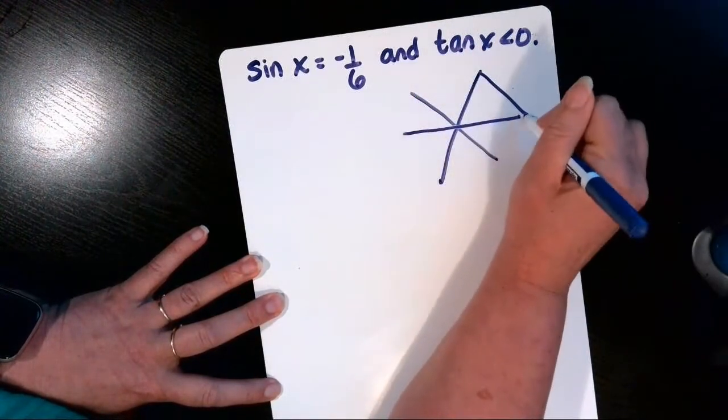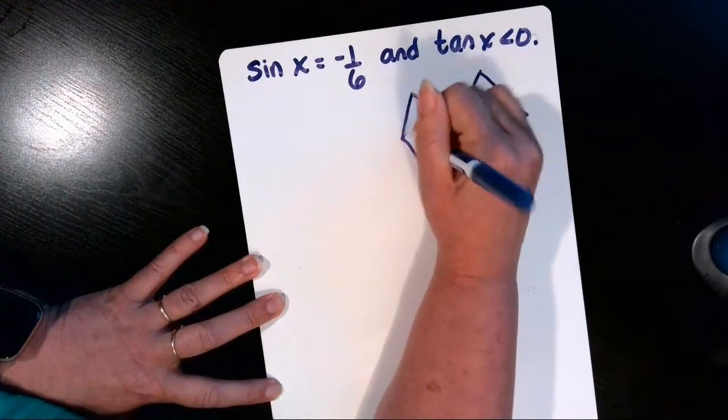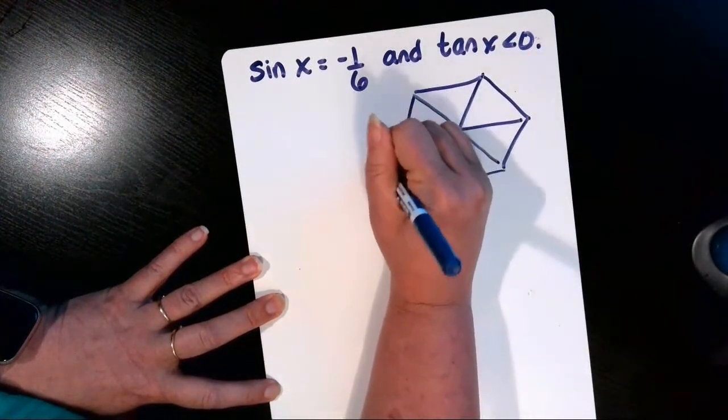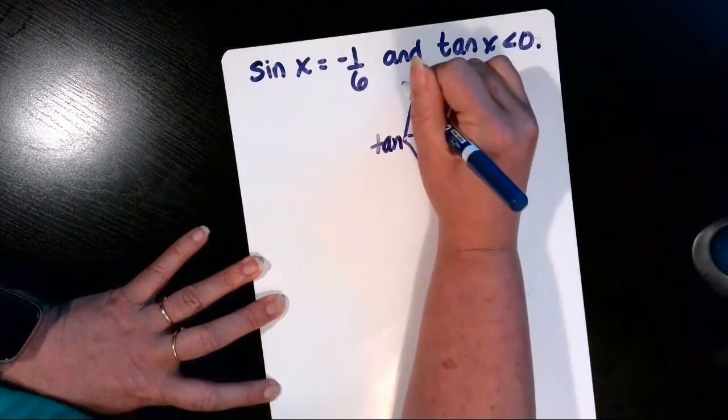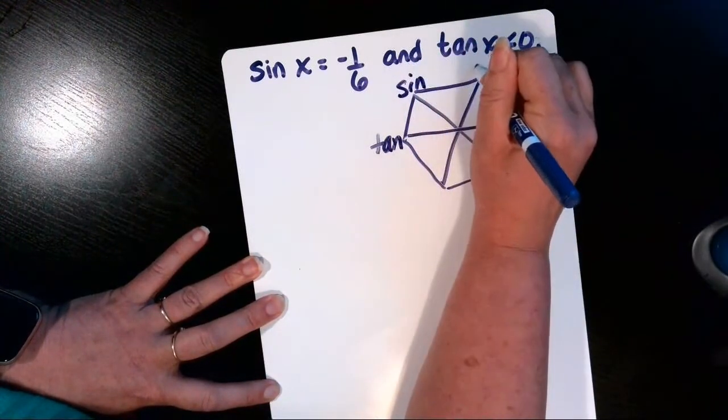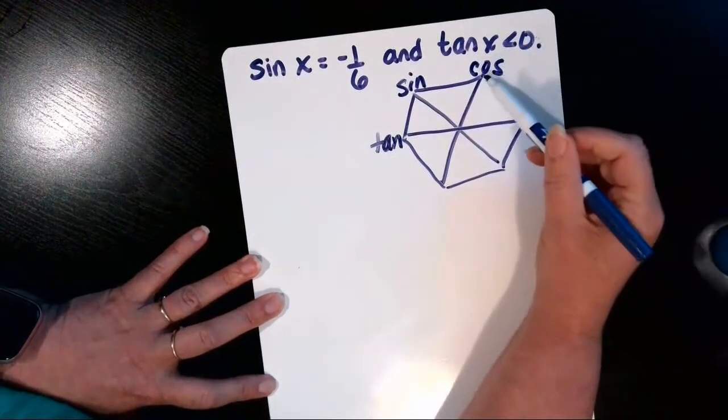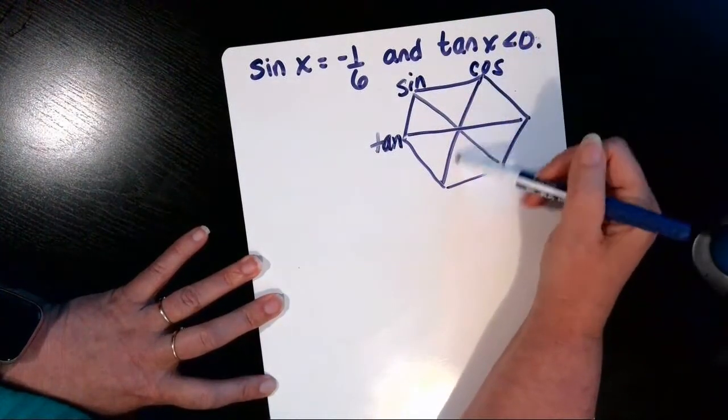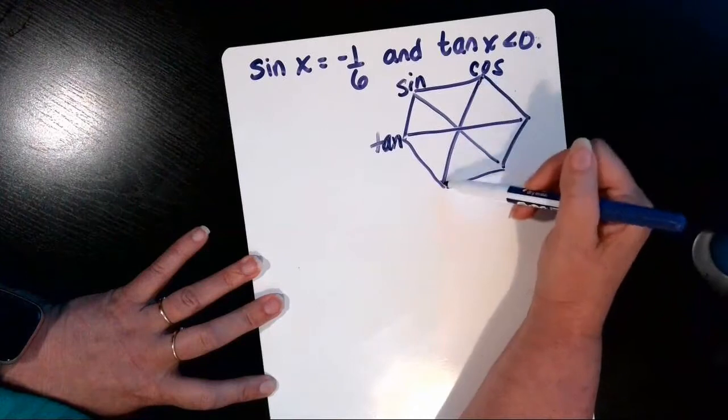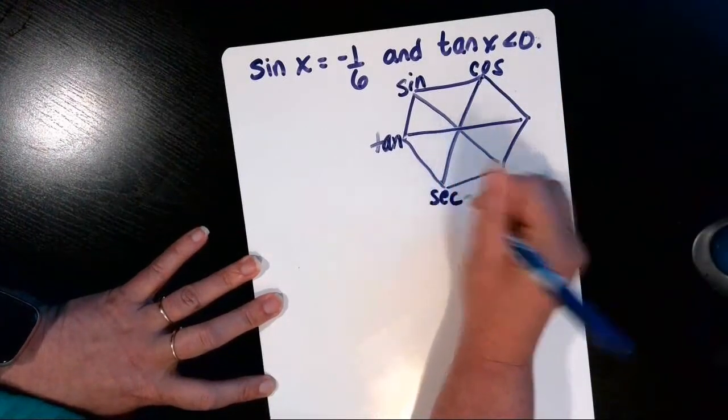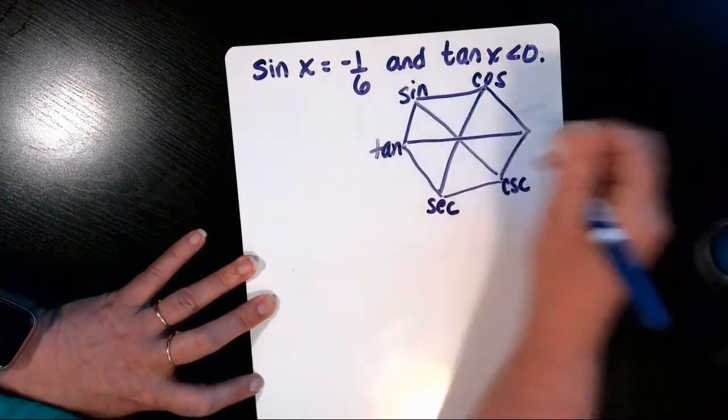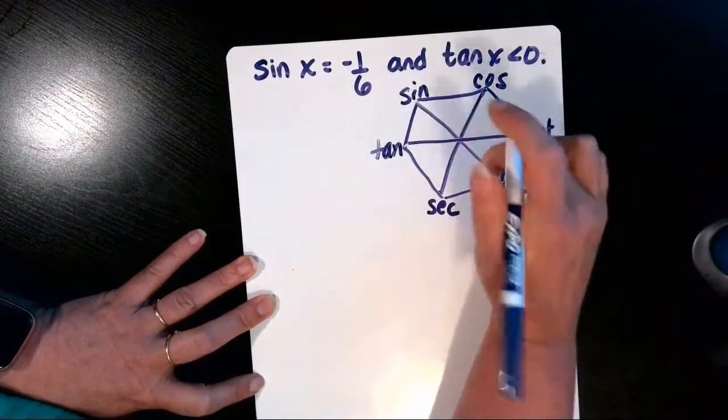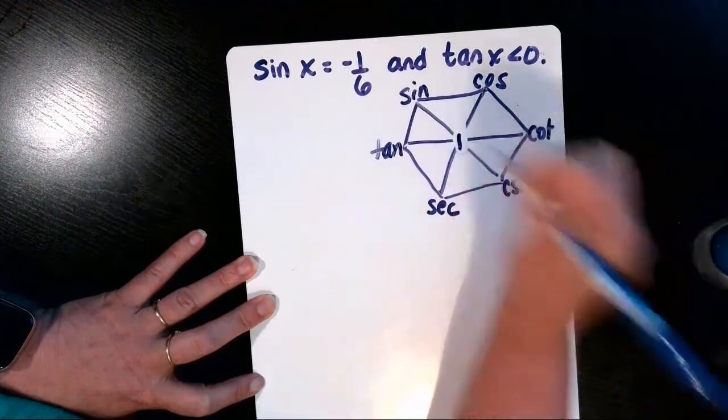The leftmost vertex gets labeled tangent, then we use the quotient identity to fill in sine divided by cosine. Reciprocal identities go diagonal, so the reciprocal of cosine is secant, the reciprocal of sine is cosecant, and the reciprocal of tangent is cotangent. In the center we put a 1.